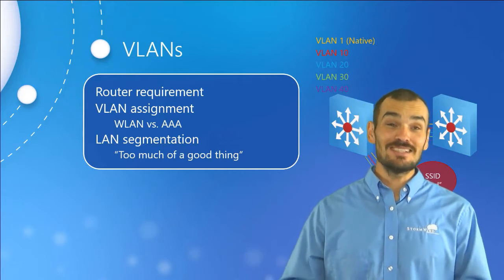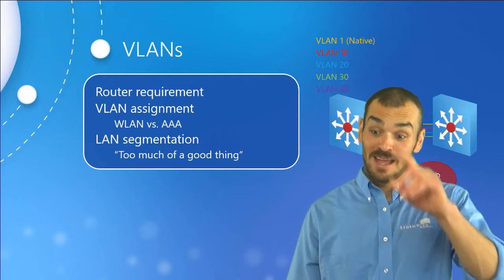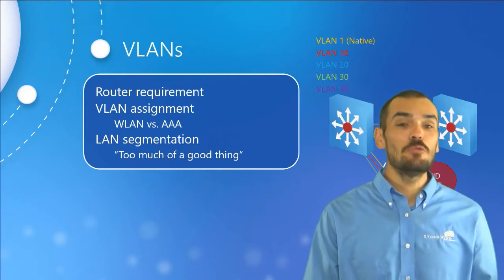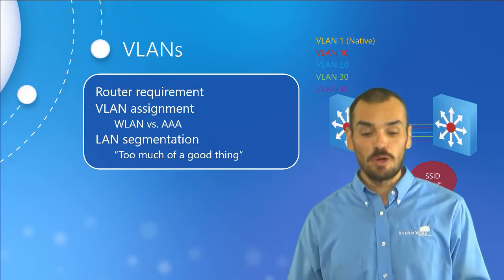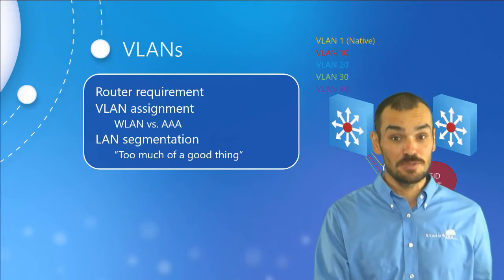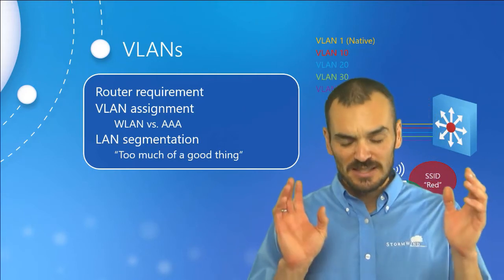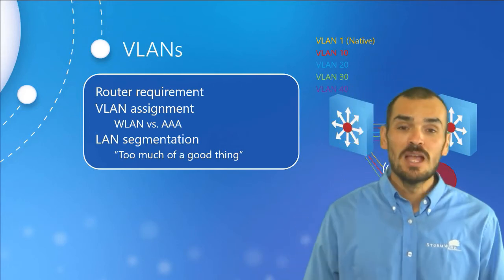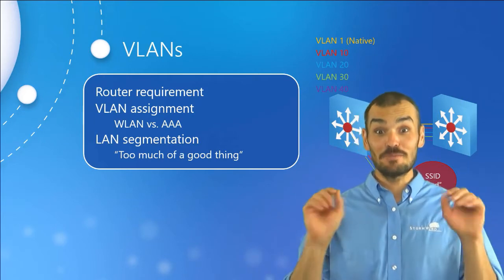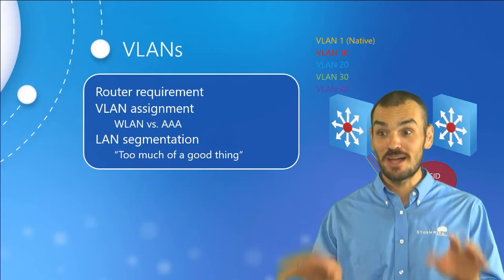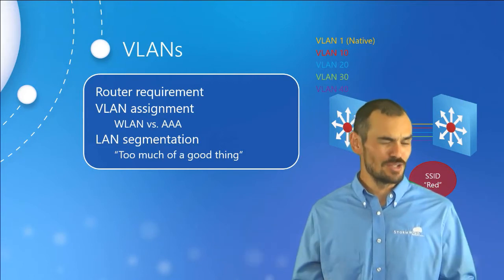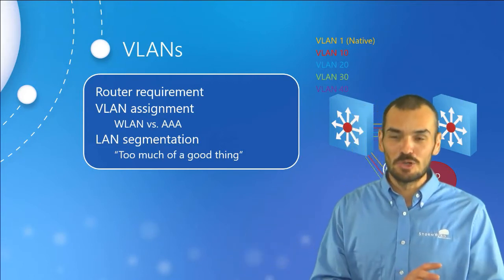A client could be connected at access point one, access point two, or in the middle of roaming between them. Because there's no fixed seating arrangement, we can't create as many VLANs as we want on the wireless side, since that same traffic gets multiplied repeatedly. On the wired side, create however many VLANs you want; on the wireless side, you have to be more strategic. There are ways to circumvent this, but factor it into your overall design.